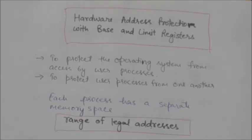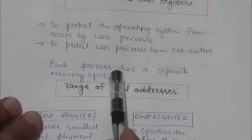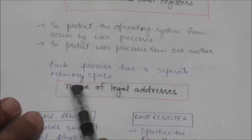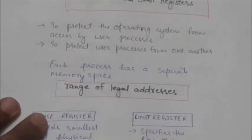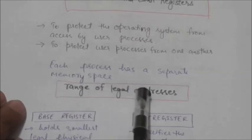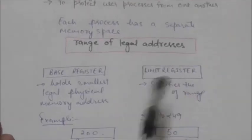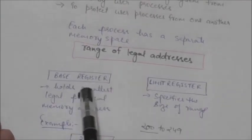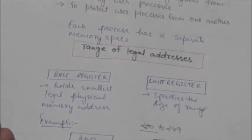This protection is provided by hardware. To implement this protection, each process has a separate memory space. A range of legal addresses is determined for each process, and the process can access only these addresses. To implement this scheme, two registers are used: the base register and the limit register. The base register holds the smallest legal physical memory address, and the limit register specifies the size of the range.